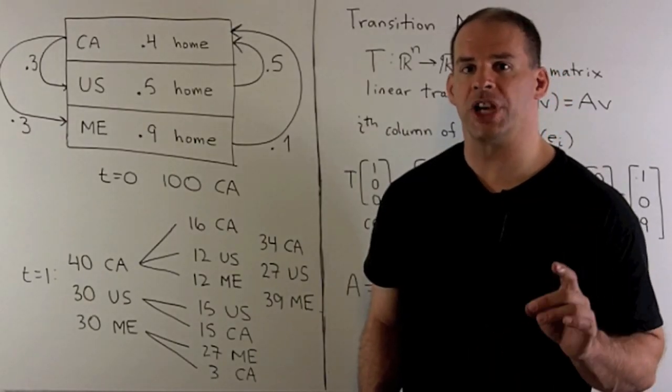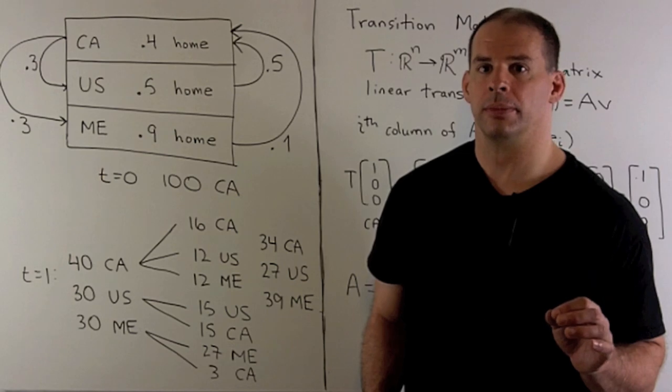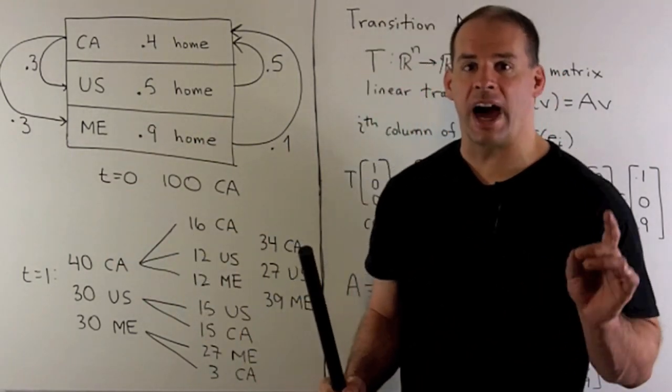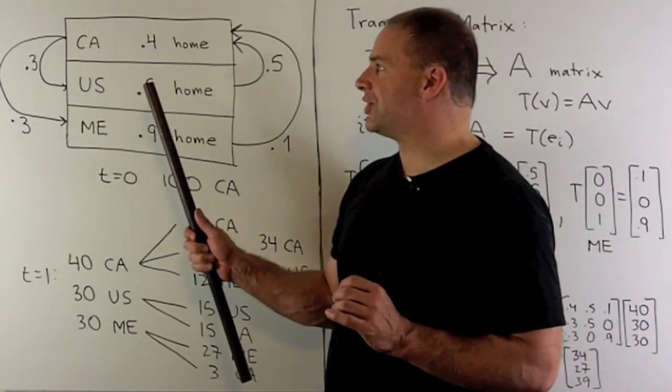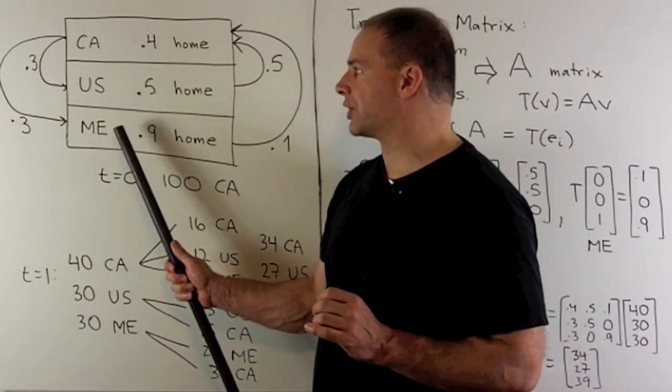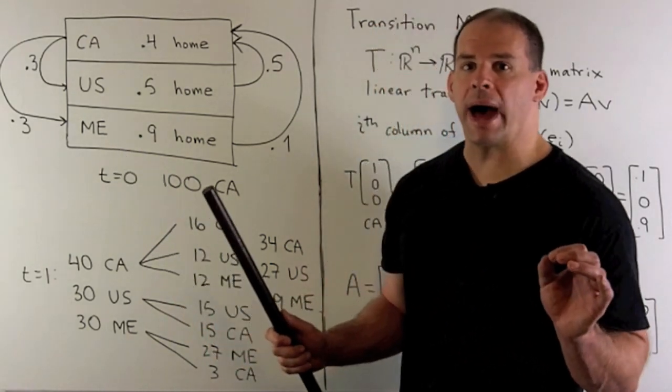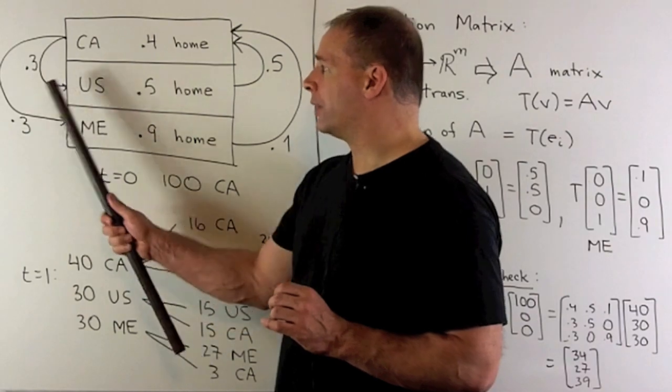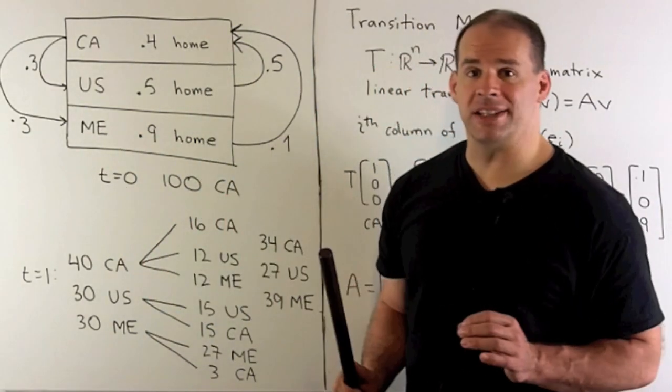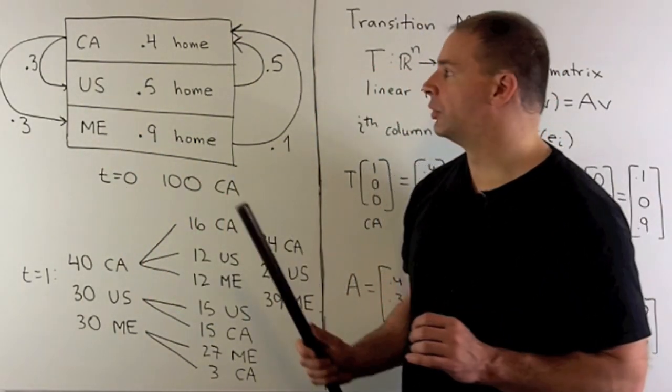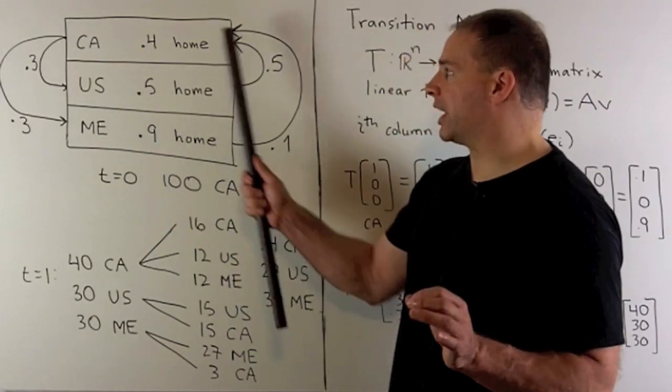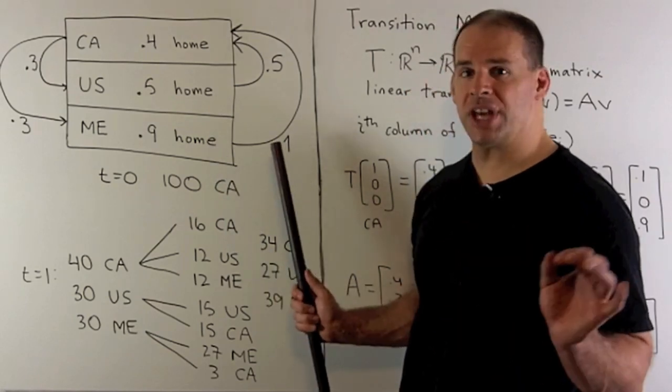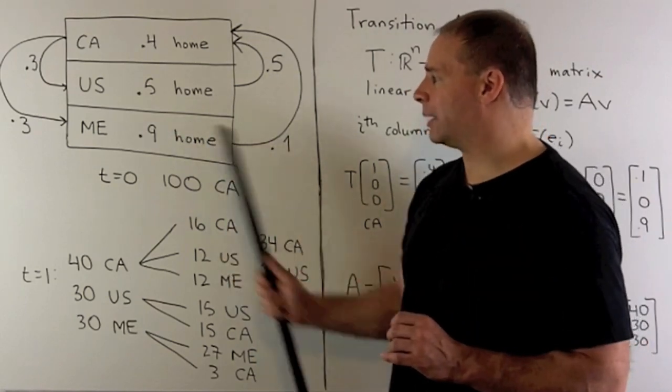Before we set up our Markov chain, let's get a feel for our numbers. We can summarize all the transitions in a diagram. If we have our populations in Canada, the US, and Mexico, we let one year go by. Then, 30% of the Canadian population goes to the US, 30% goes to Mexico, 40% stays at home. For the US, 50% goes to Canada, 50% stays at home. For Mexico, 10% goes to Canada, 90% stays at home.